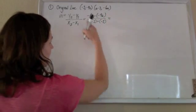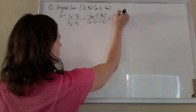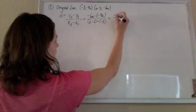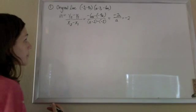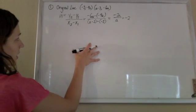Cleaning that up, I've got negative 2a all over a. As will cancel, give me a slope of negative 2. So I've got the slope of my original line.